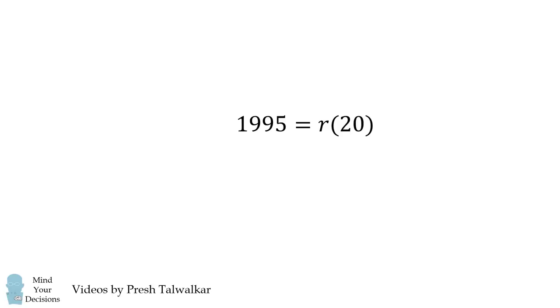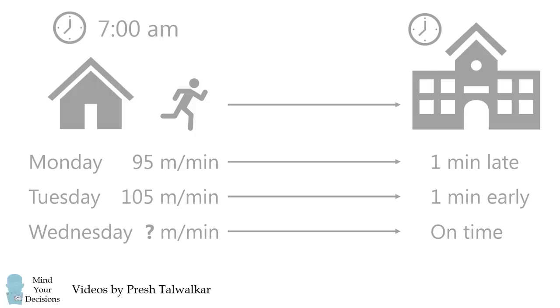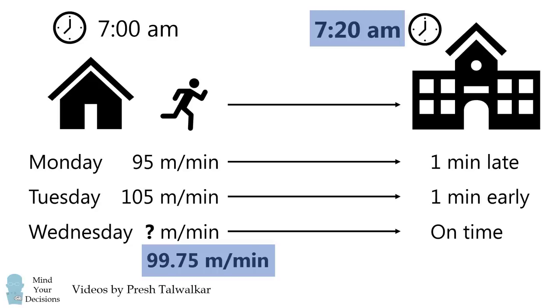We then solve for r, which will be 1995 over 20, and we get the answer of 99.75, and that will be meters per minute. So here are the two answers. Pedro reaches at 7:20 a.m., and he goes at a speed of 99.75 meters per minute.